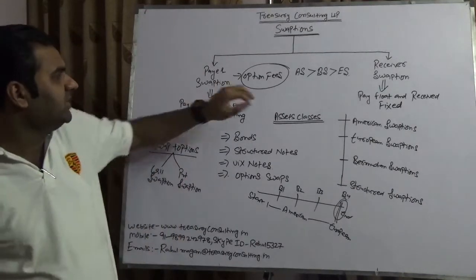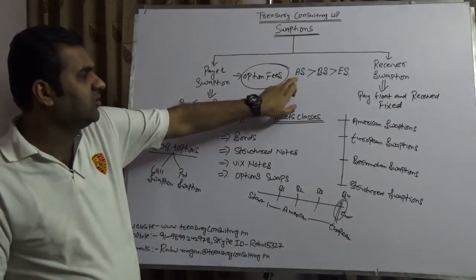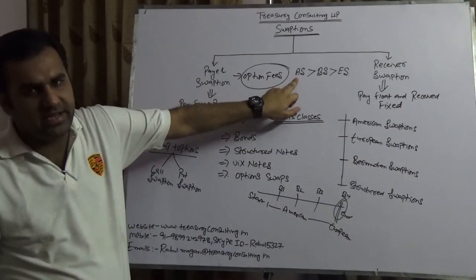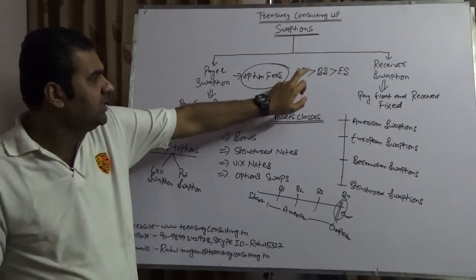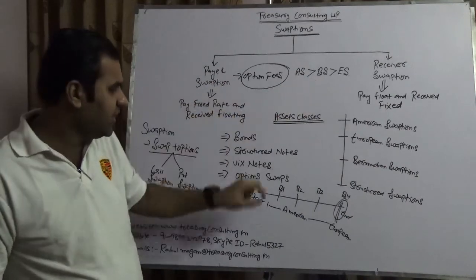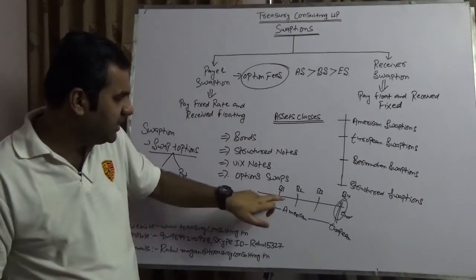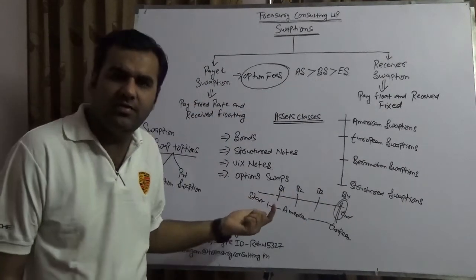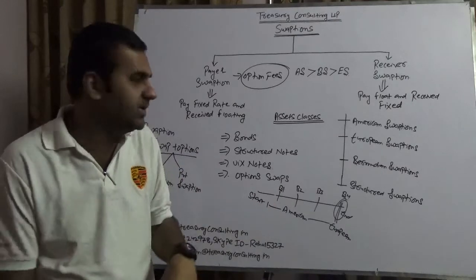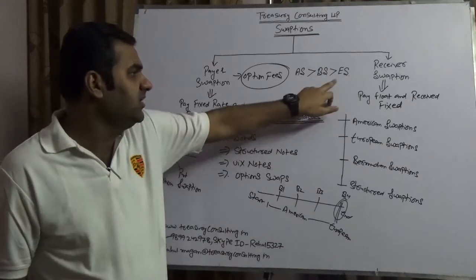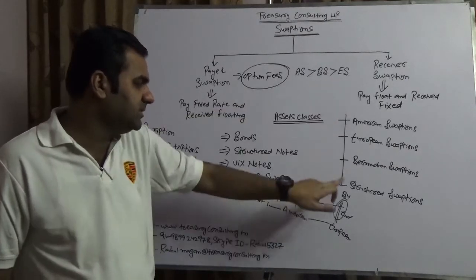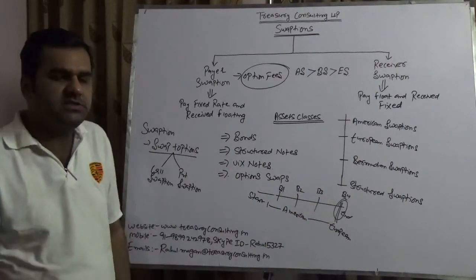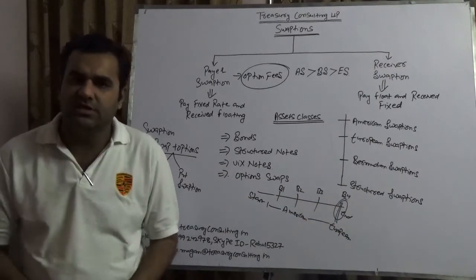When it comes to option fees, the highest is always American swaption because settlement can happen anytime. Then Bermudian swaption, because you have periods B1, B2, B3, B4 — and remember, you are not limited to only four periods; you can have any number of periods. Then you have European swaption, which is always exercised at maturity.